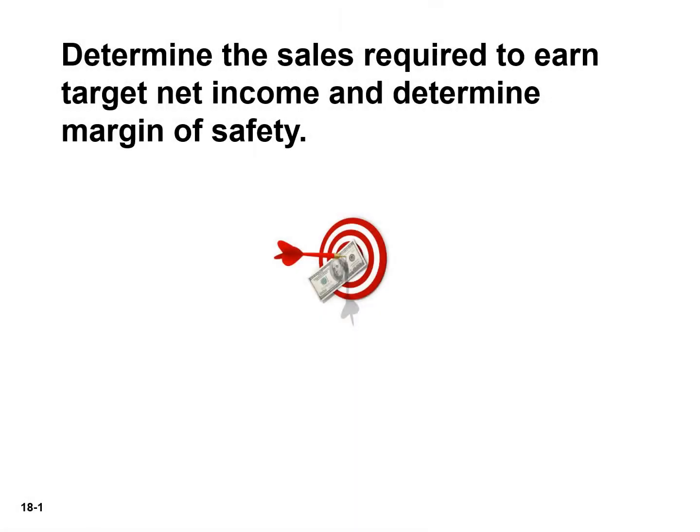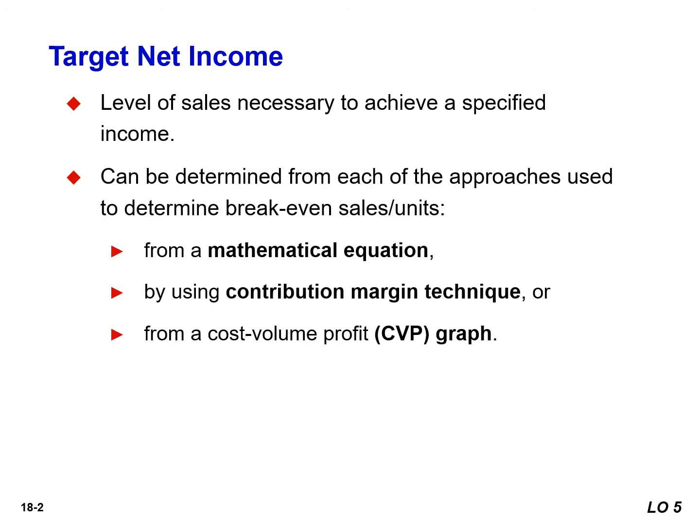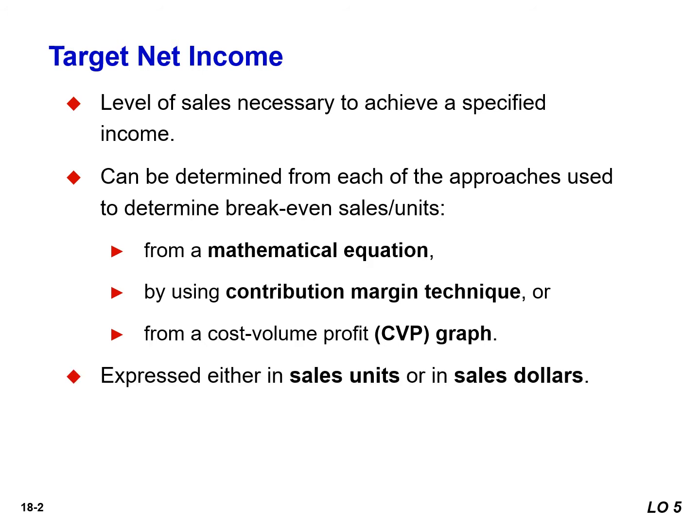In this video, we will determine the sales required to earn target net income as well as determine margin of safety. Rather than simply break even, management usually sets an income objective, often referred to as the target net income. It then determines the sales necessary to achieve the specified level of income. Companies determine the sales necessary to achieve target net income by using one of the three approaches discussed earlier, expressed in either sales units or sales dollars.